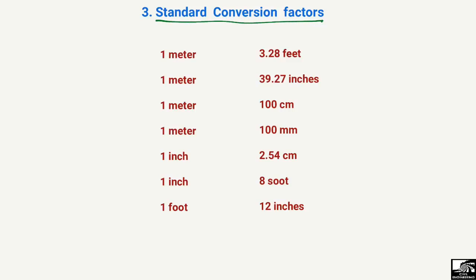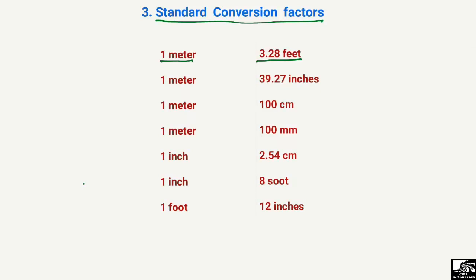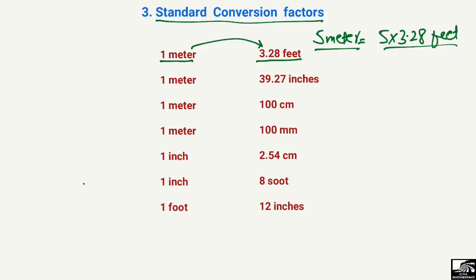Next are the standard conversion factors. For example, 1 meter equals 3.28 feet — so if you want to find 5 meters in feet, you multiply 5 × 3.28. Also, 1 meter equals 39.27 inches — so to find 3 meters in inches, you multiply 3 × 39.27 inches.